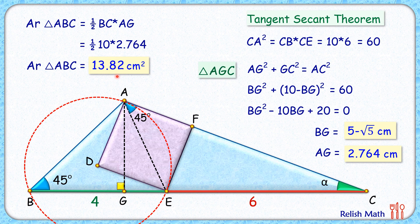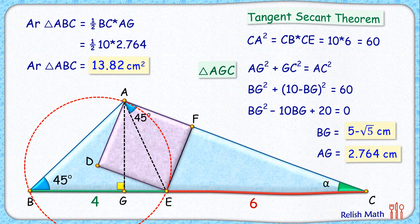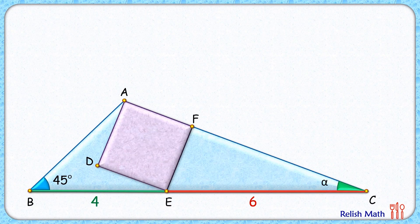Now that we have the height, putting BC as 10 and AG as 2.764 into the area formula, we get the area of triangle ABC as 13.82 cm². That's our answer for the first approach. Now let's check the second approach.